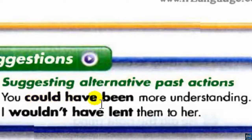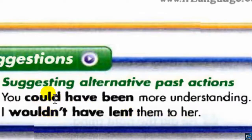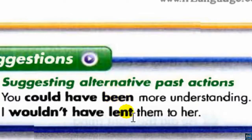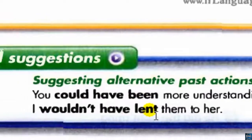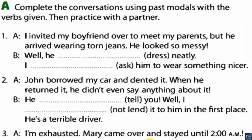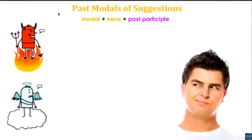'You could have been more understanding.' 'Being' — British and American both say 'been.' 'I wouldn't have lent them to her.' Here we can use could, would, or the negatives couldn't/wouldn't + have + past participle. 'Being' — past participle of 'to be.' 'Lent' — past participle of 'lend.'